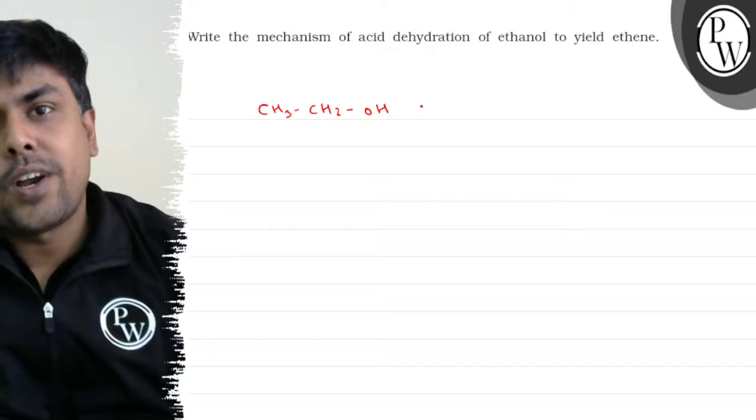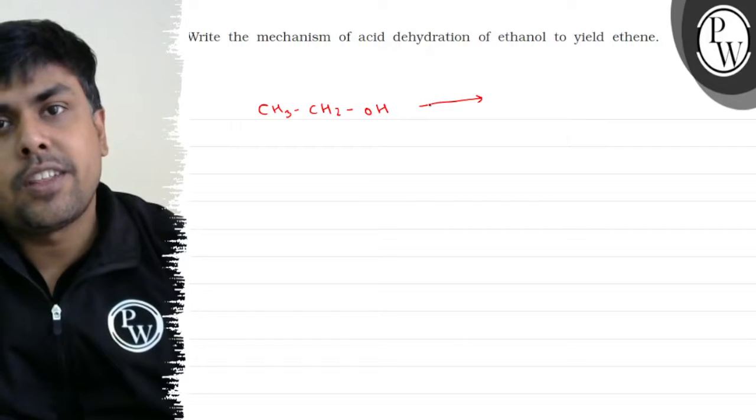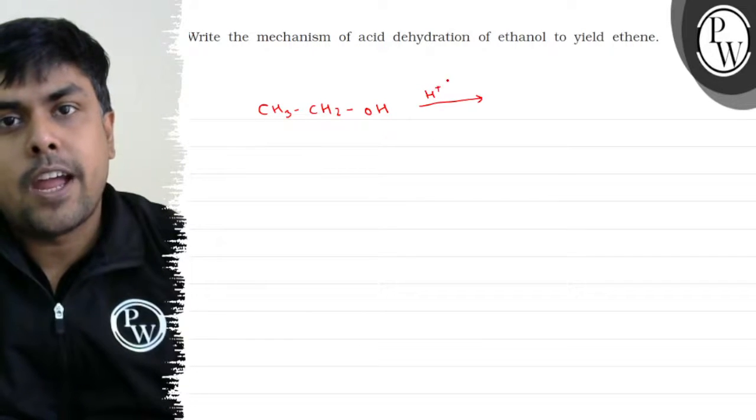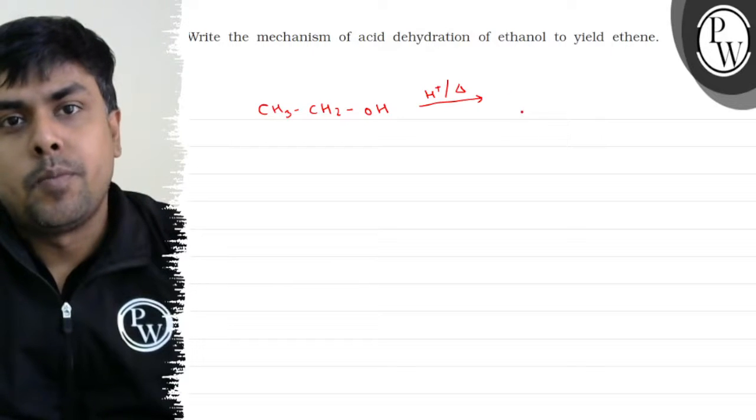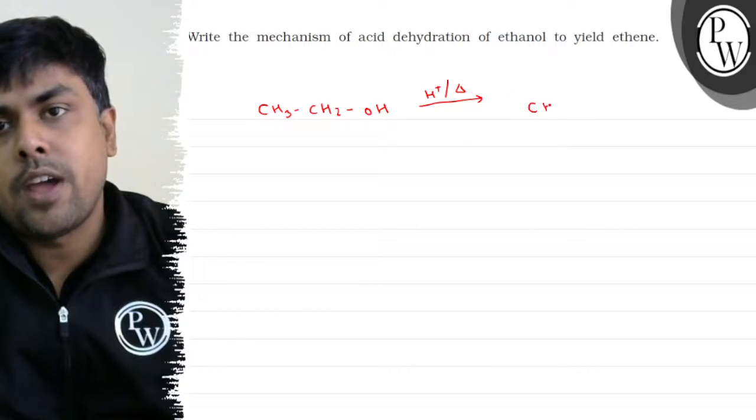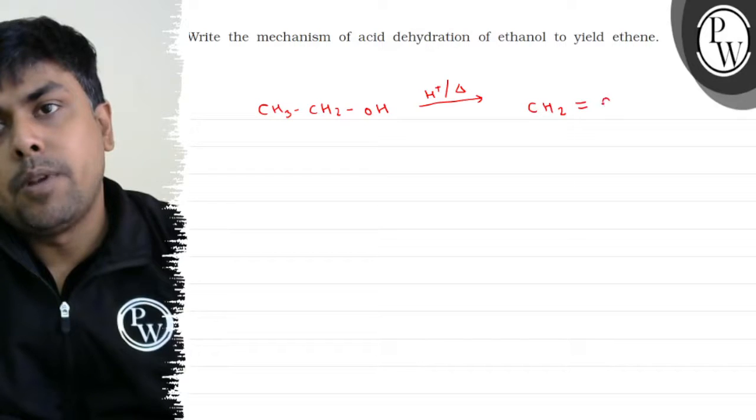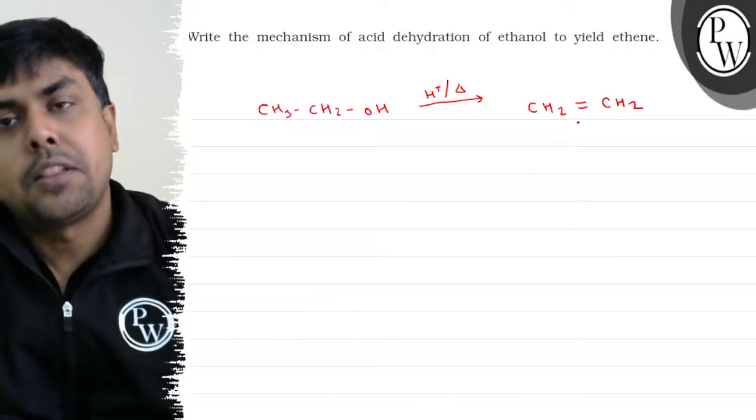And now what I am doing, I am treating it with H+ and I am heating it. My product is CH2 doubly bonded CH2, ethene.